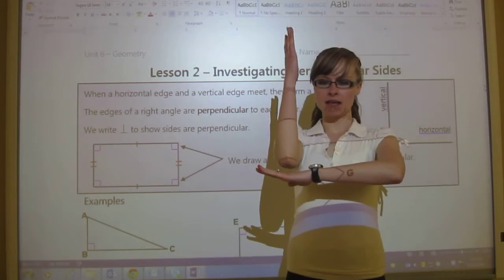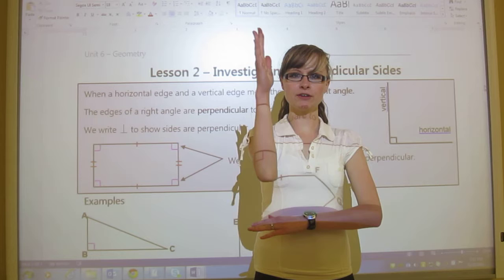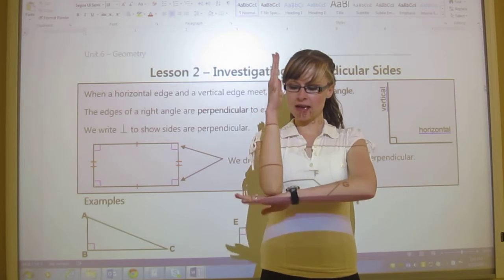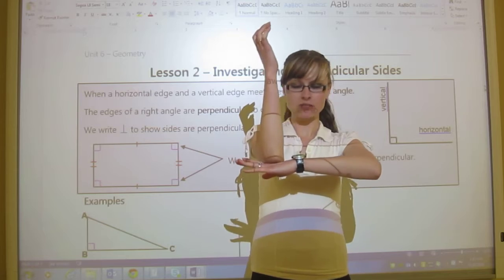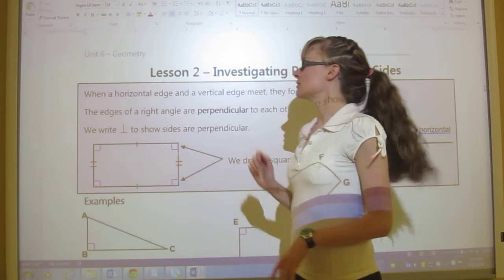And that means that they are like this. So one vertical line and one horizontal line. And where they meet, that is where they're perpendicular, right where my elbow touches my hand.